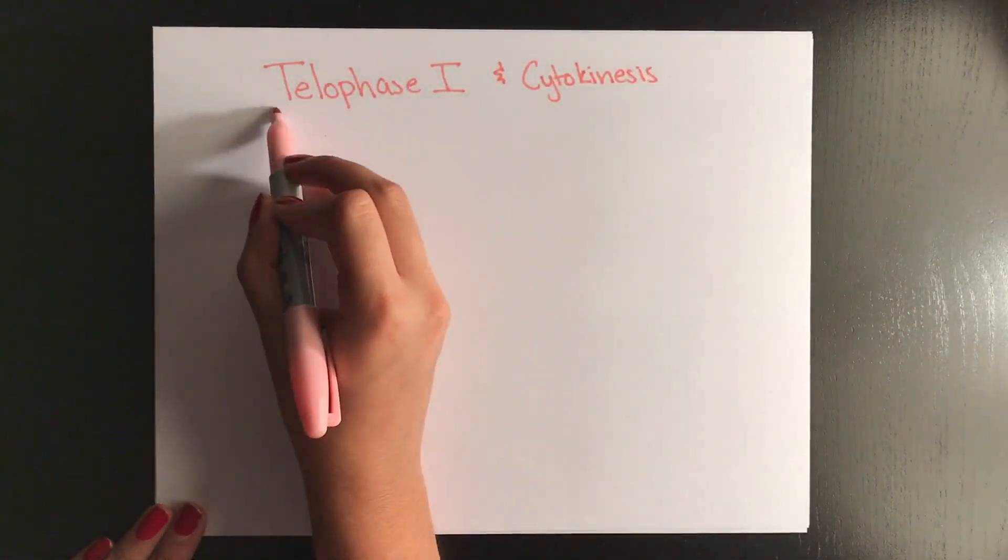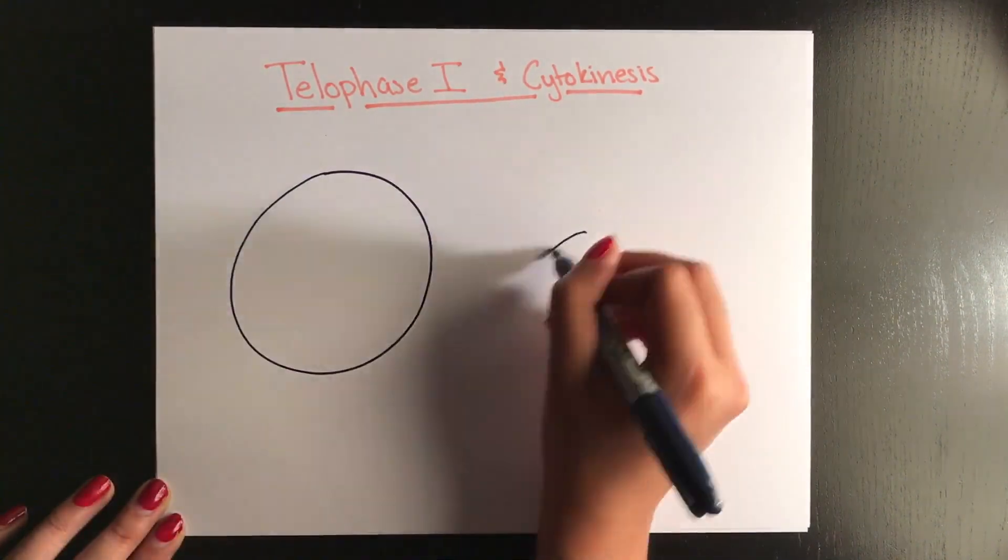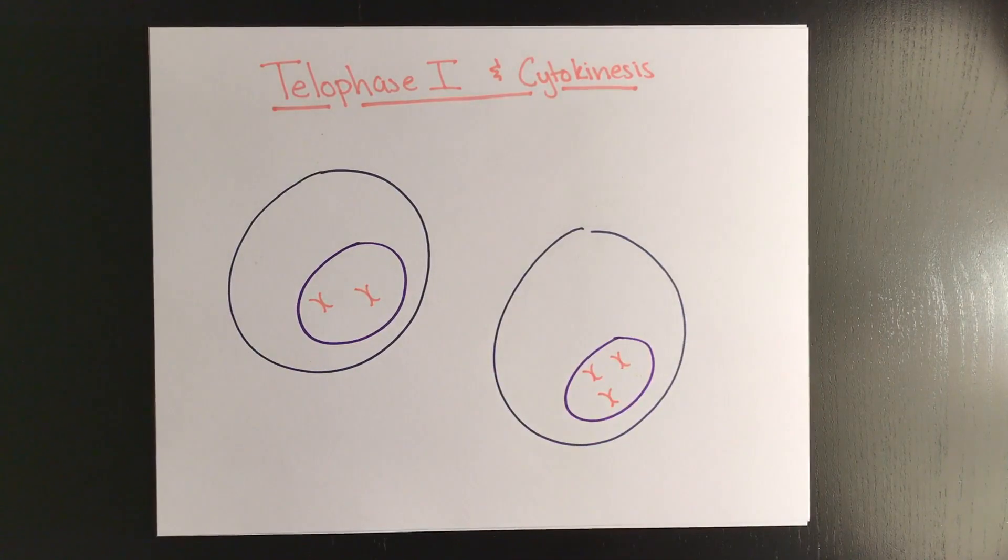During telophase 1, the two cells finish dividing their cytoplasm via cytokinesis. The membranes reform, and each cell has 23 replicated chromosomes, and technically are considered haploid cells because they have 23 replicated chromosomes.